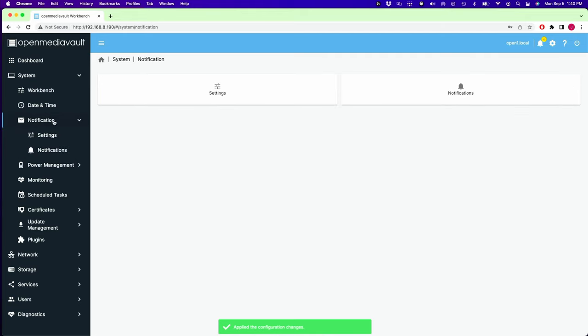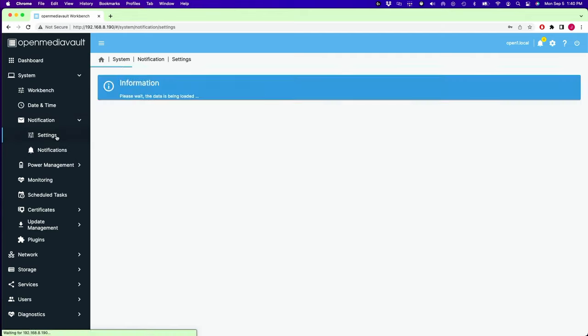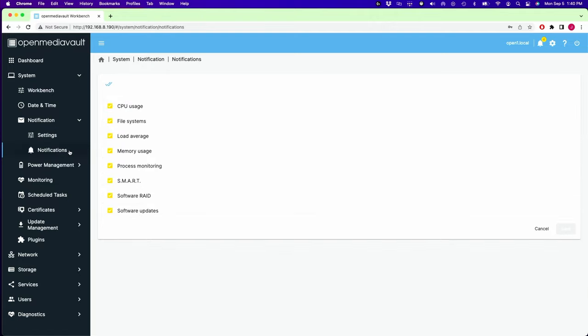Next we go to Notifications, and so we have two settings. The setting to enable you to send emails from your server and who they're sent to, and then which notifications that get sent.